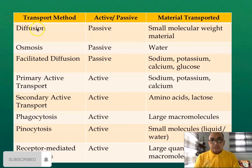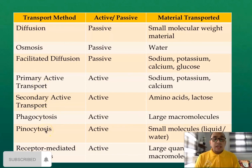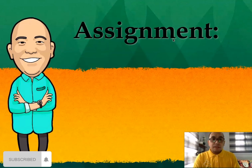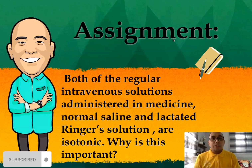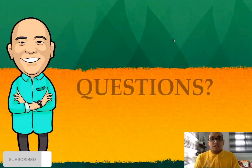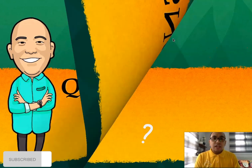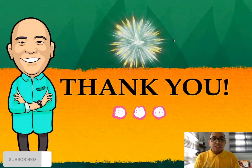For our key concepts and summary, the transport methods include: diffusion, osmosis, facilitated diffusion, primary and secondary active transport, phagocytosis, pinocytosis, and receptor-mediated endocytosis, along with the different materials being transported. For your assignment: research why regular intravenous solutions administered in medicine — normal saline and lactated Ringer's solution — are isotonic, and why this is important. Submit your answer in our respective Google Drive. If you have no further questions regarding transport mechanisms, that's all for today. Thank you so much and God bless!